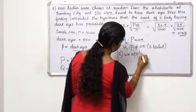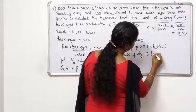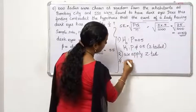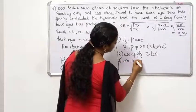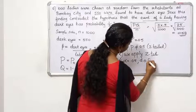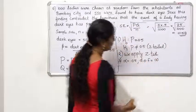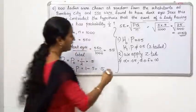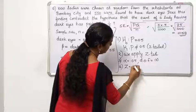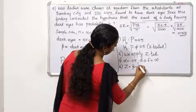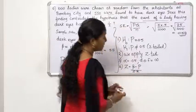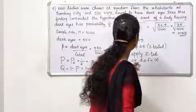The population proportion test always uses the Z test. The level of significance is 0.05, and the degree of freedom is infinite. Now let's compute the test statistic using the formula: small p minus capital P by standard error.